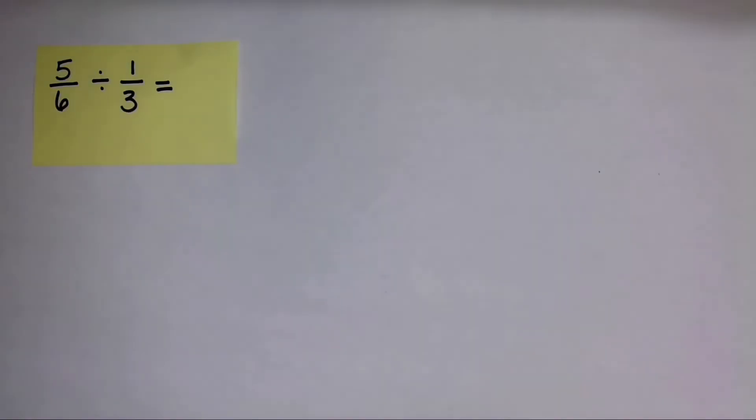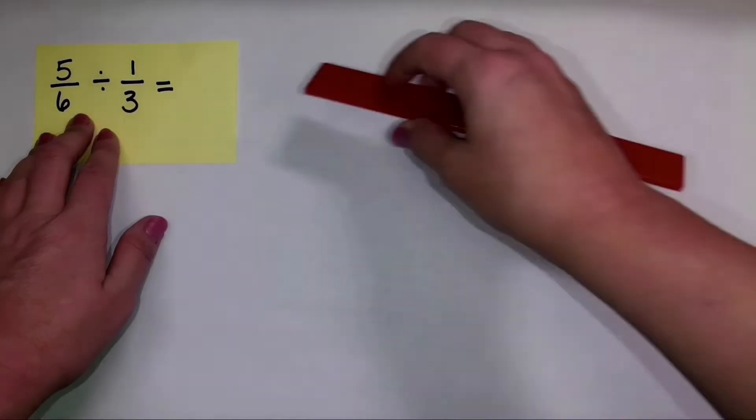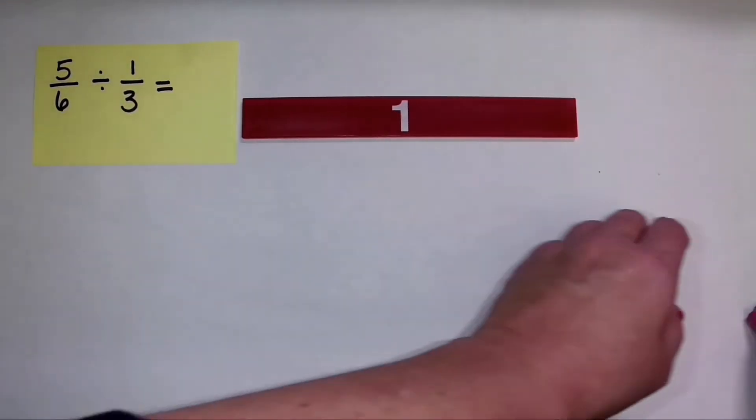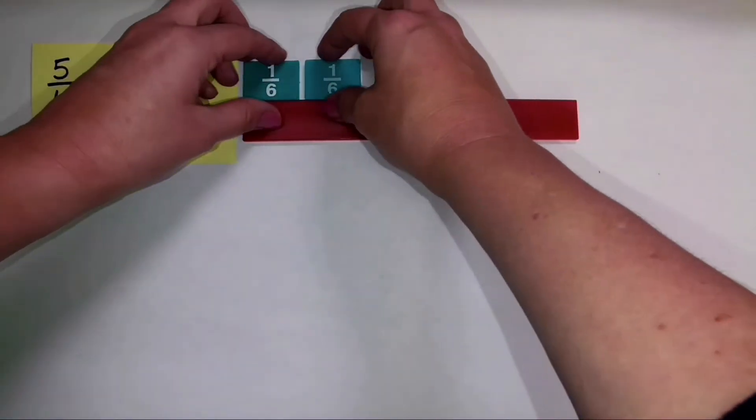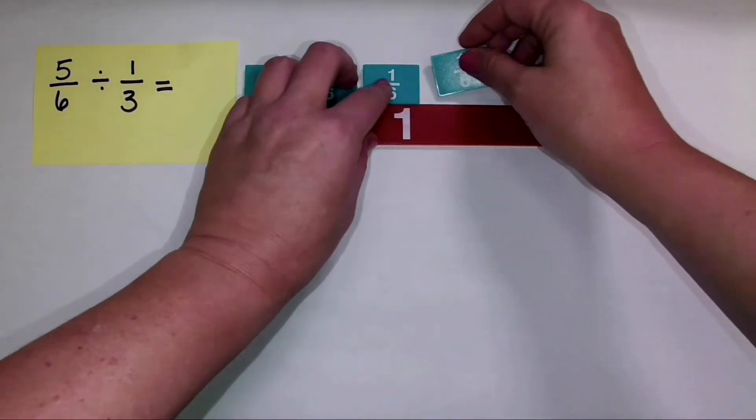So we're dividing five-sixths by one-third. So I want to figure out how many groups of one-third I have when I make five-sixths. So I'm going to get out my whole and I'm going to show my five one-sixths pieces here. All right?